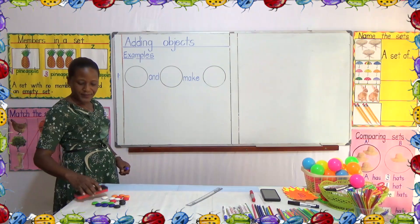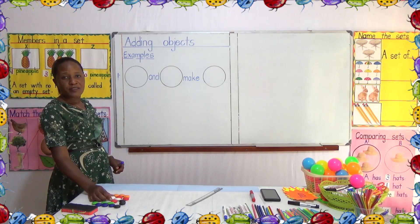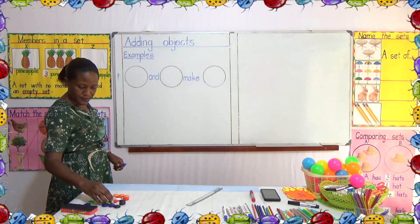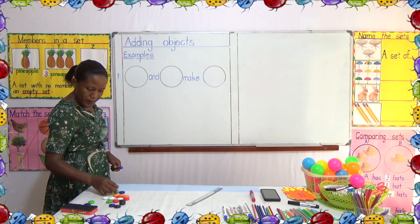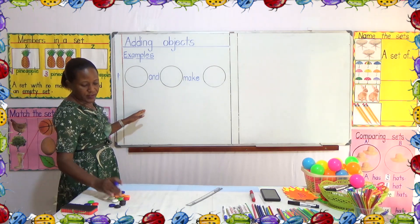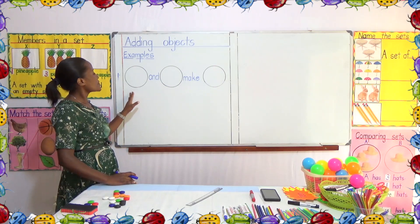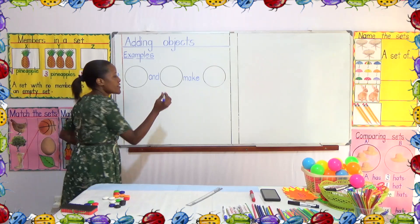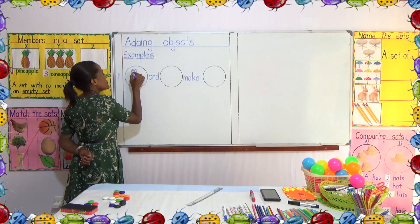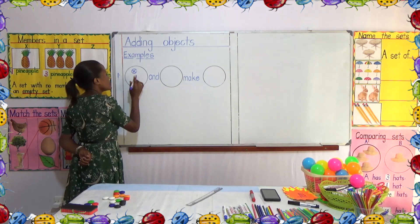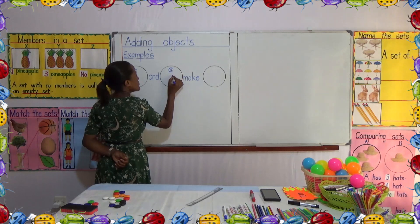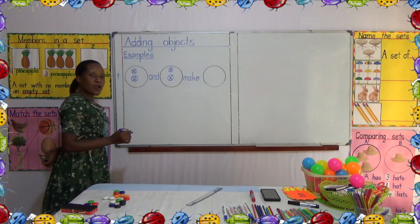What does this mean? Let's have examples — examples first. In our examples, we shall have the first example having buds.